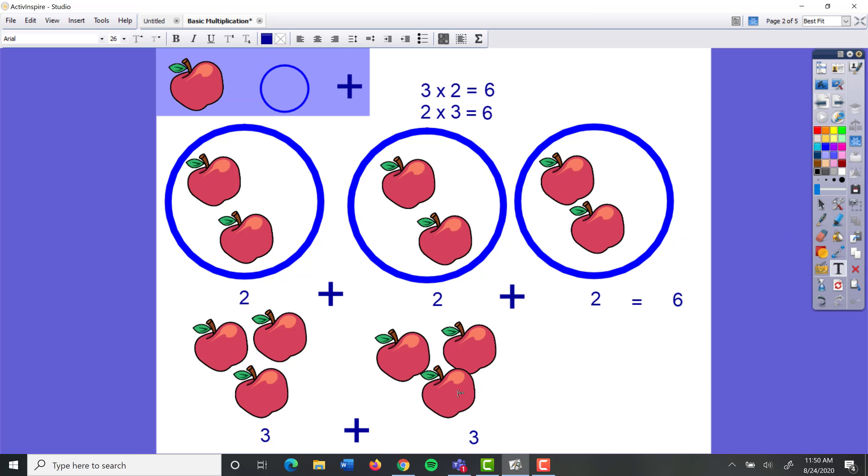That's something we call the commutative property. You don't need to know the name of it, but you do need to understand that it doesn't matter which order these two numbers are in. If you say three times two or two times three, it's still going to equal the same answer. And you can see that here. If I have three groups of two apples, that's six. And if I have two groups of three apples, it's still six.